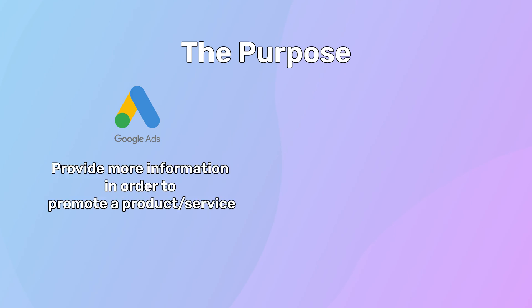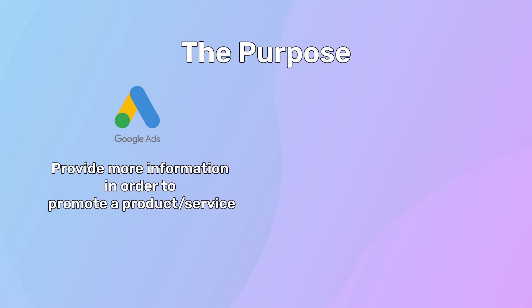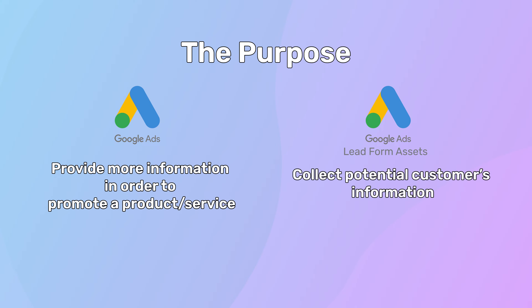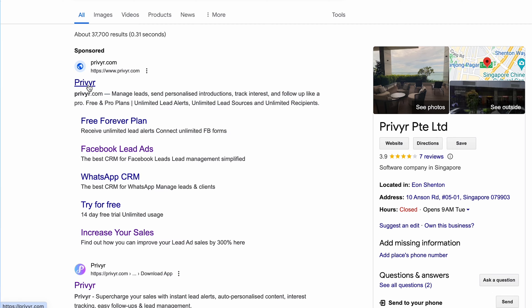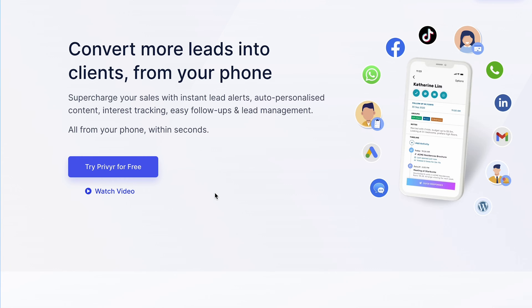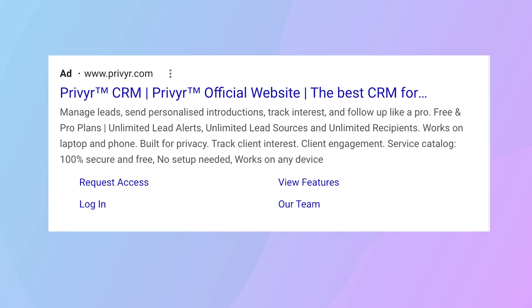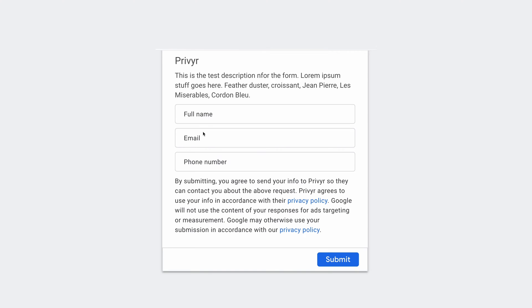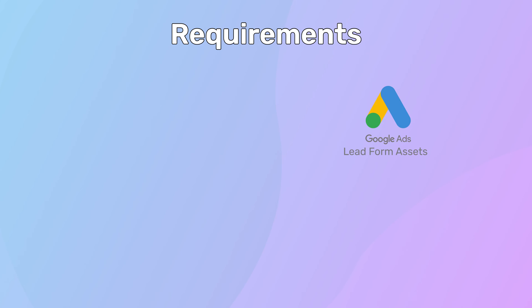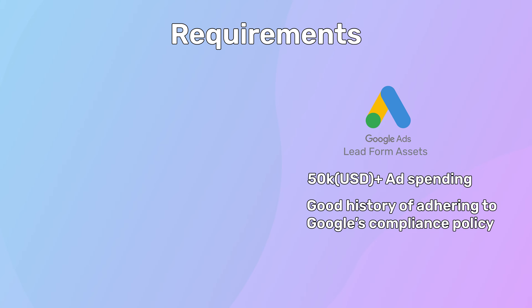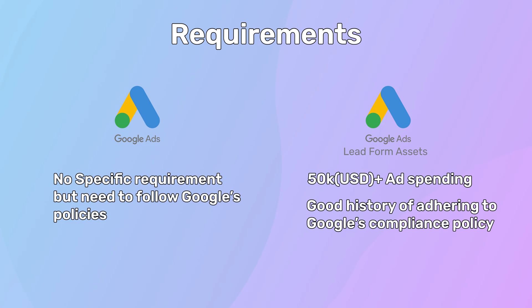The primary purpose of Google Ads is to provide more information, sell, or promote a product or service. In contrast, the purpose of Google Ads Lead Form Assets is to collect lead information. Once clicked, regular Google Ads generally redirect users to the advertiser's website, while Google Ads Lead Form Assets opens a form for users to fill and submit. Additionally, you can only run certain types of Google Ads Lead Form Assets if you have spent more than $50K USD in Google Ads and have a good history of adhering to Google's compliance policy, whereas regular Google Ads doesn't need any specific requirements as long as you are following Google's policies.